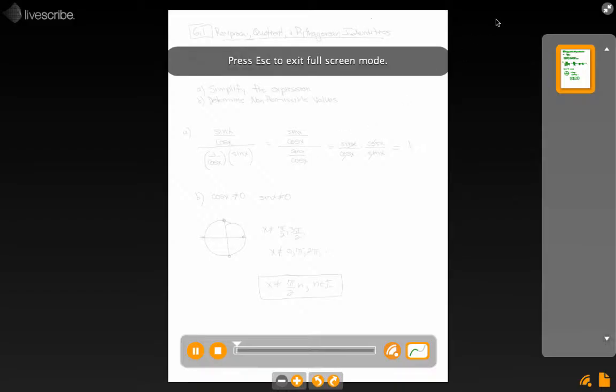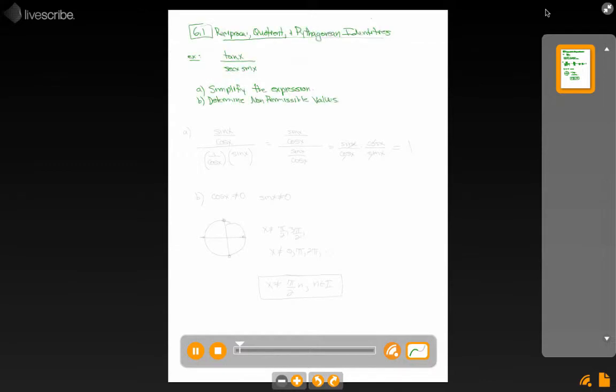This example comes out of section 6.1, Reciprocal Quotient and Pythagorean Identity. In this example, we're given an expression, it's not an equation, it clearly can't be an identity because there's not even an equal sign, but we do have tan x divided by secant x sin x.